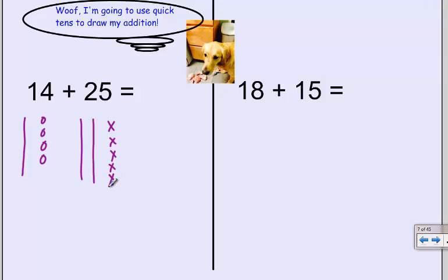Now, I want to group my tens together. So I have a ten, a ten, and a ten. So I have three tens, or thirty. And then I can count my ones. One, two, three, four, five, six, seven, eight, nine. Three tens and nine ones make thirty-nine.